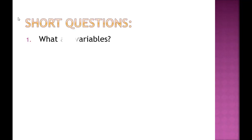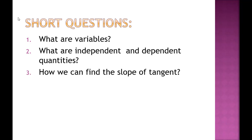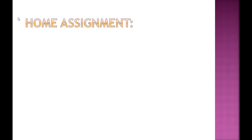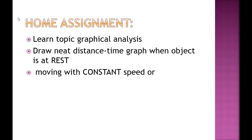It is time for short questions. Write the answers neatly in your copies and memorize them well. First question: what are variables? Second: what are independent and dependent quantities? Third: how can we find the slope of the tangent? For your home assignment, learn the topic Graphical Analysis thoroughly, memorize it well, and neatly draw in your copy the distance-time graph where the object is at rest, where the object is moving with constant speed, and where the object is moving with variable speed.